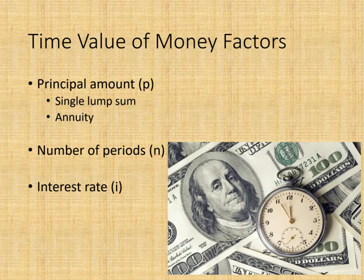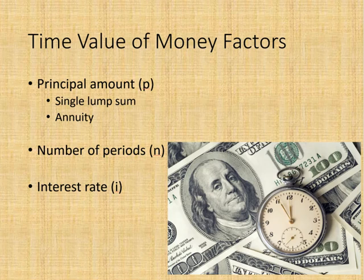The number of periods is the length of time from the beginning of the investment until termination. All else being equal, the shorter the investment period, the lower the amount of interest earned. The interest rate is the annual percentage rate earned on the investment and is always given as an annual rate.